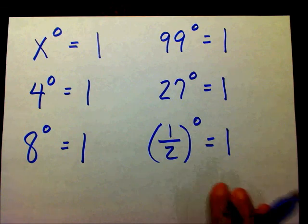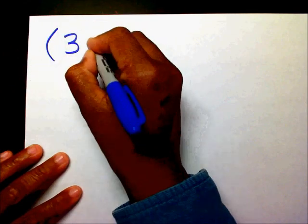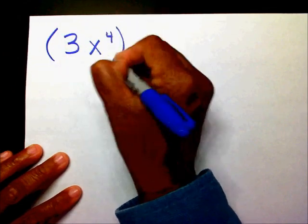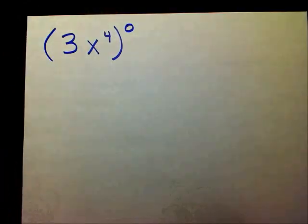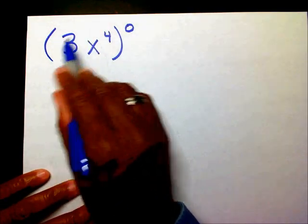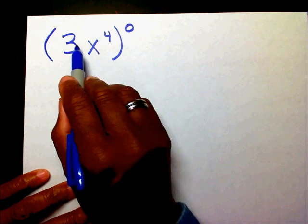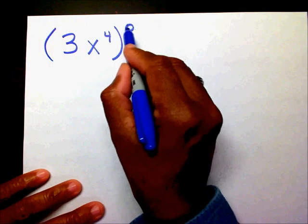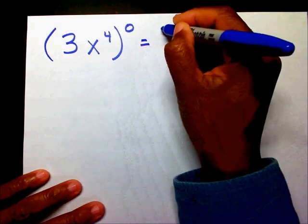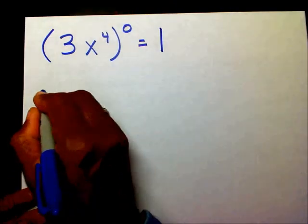And we can even expand this to this problem: three x to the fourth raised to the zero power. Even though I have these two bases inside my parentheses, as long as it's raised to the zero power the answer is going to be one. I can have in